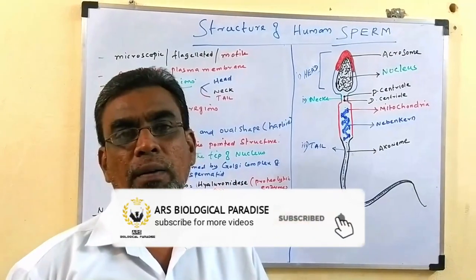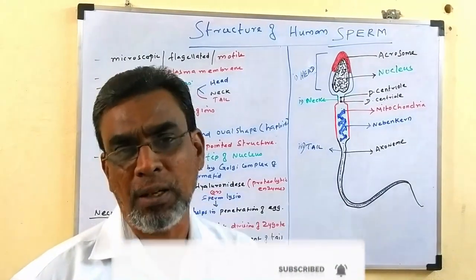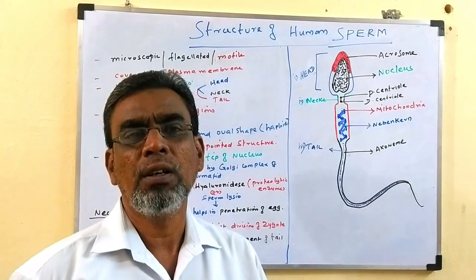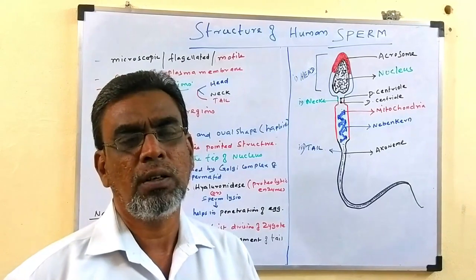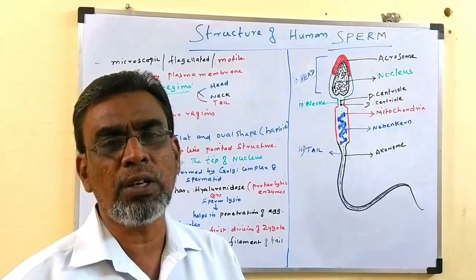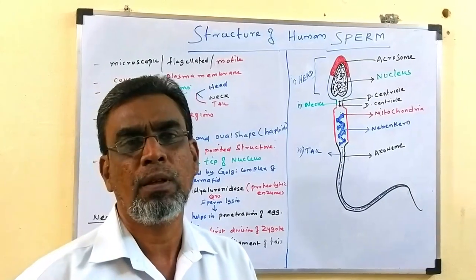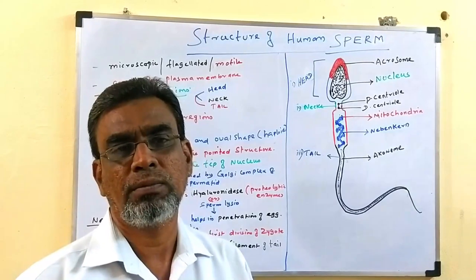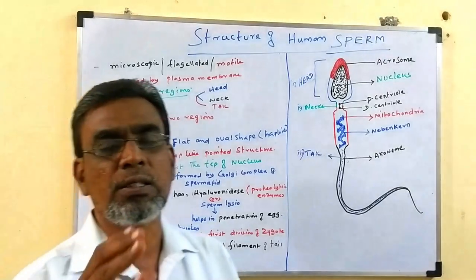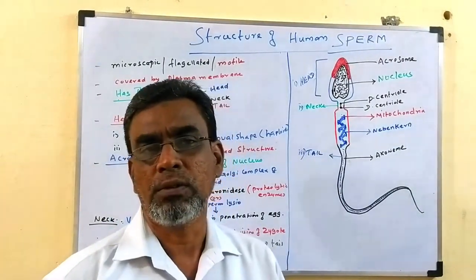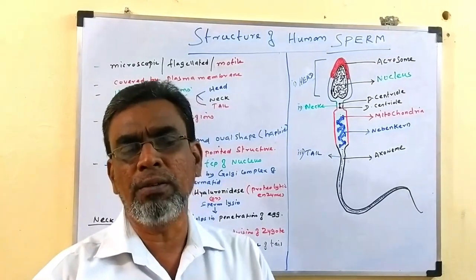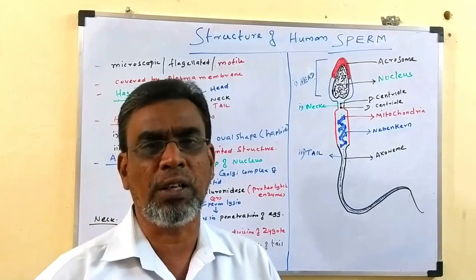Dear students, welcome to ARS Biological Paradise. I am very happy to meet you again. In this class, we are going to discuss a new topic. In the last class, we studied about the structure of ovum, the female gamete. But in this class, we are going to study about the structure of sperm of human — that is called the male gamete. There are a lot of differences between the female gamete and male gamete.